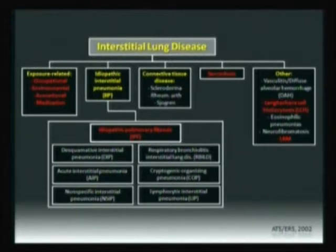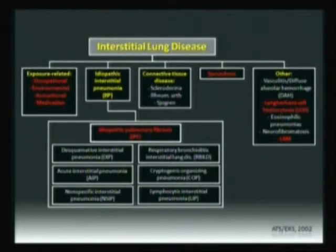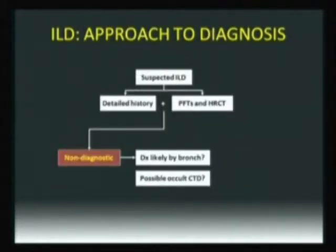Sarcoid — most cases may be diagnosed even before BAL. IPF — we've seen that 50 to 60% of patients will get diagnosed before lung biopsy. Lung Langerhans cell histiocytosis or LAM has typical features at high-resolution CT scan; you make the diagnosis at this stage. But in a fraction of these diseases, this is not enough. You need to ask yourself: do I need bronchoscopy, or is it possible that this patient has a non-obvious connective tissue disease?